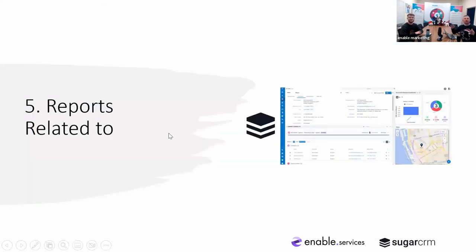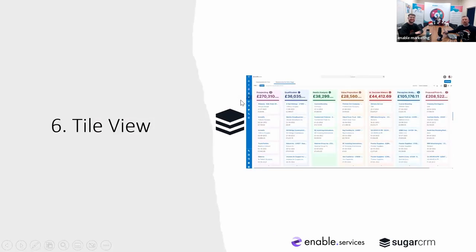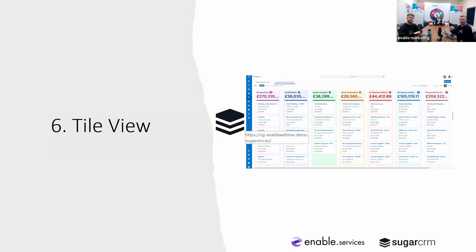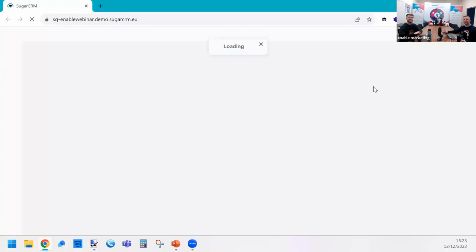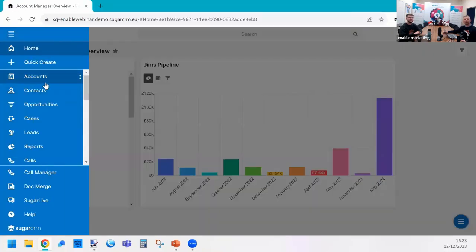Our next feature: Tile View. Tile View was in Sugar 12 but has been updated for Sugar 13. The beauty is you can now have it on any module — before it was mainly for opportunities or lead management, but now you can use it on cases, or anything really with a dropdown status field because it's driven by the status field. Let's go look at it — going to Opportunities in this case.